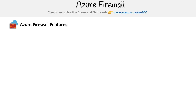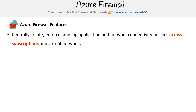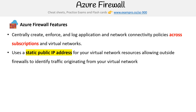Let's talk about some of the features of Azure Firewall. It creates and enforces application and network connectivity policies across subscriptions and virtual networks — subscriptions being multiple accounts. It also uses a static public IP address for your virtual network resources, allowing outside firewalls to identify traffic originating from your virtual network, which is very useful.